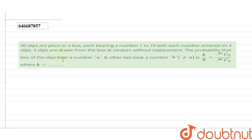Hi students, welcome to Doubtnut. The problem given is on probability where 40 slips are placed in a box, each bearing a number 1 to 10 with each number entered on 4 slips.